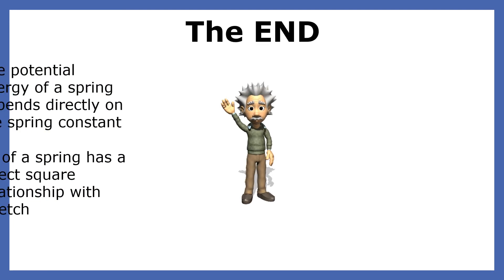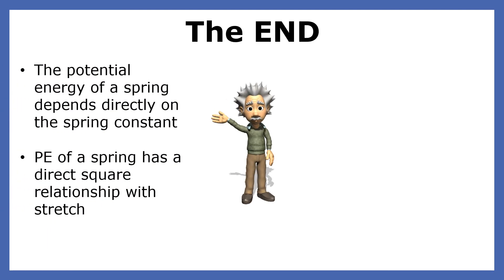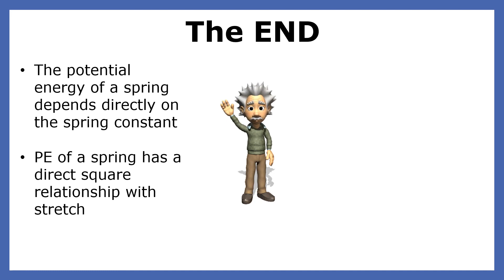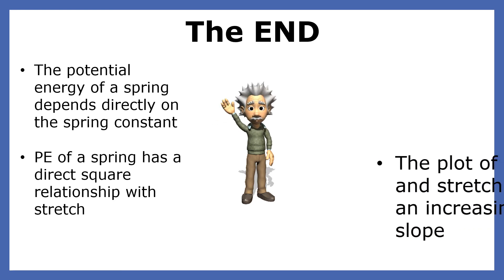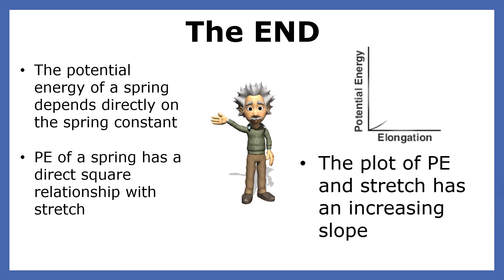Let's summarize what you've learned. The potential energy of a spring depends directly on the spring constant. The potential energy of a spring has a direct square relationship with stretch. And the plot of potential energy and stretch has an increasing slope.